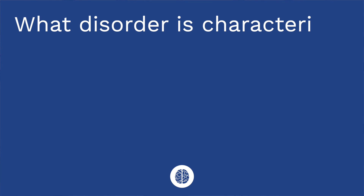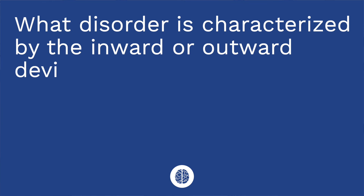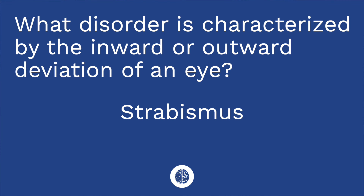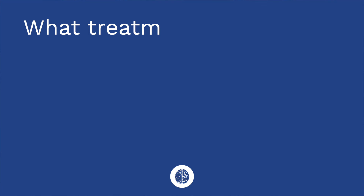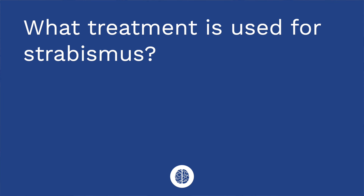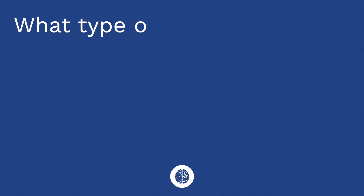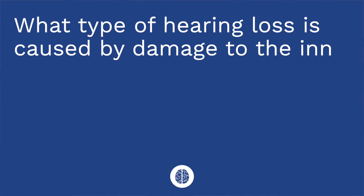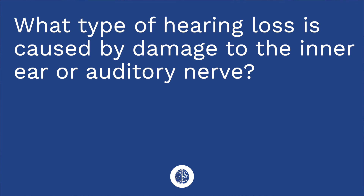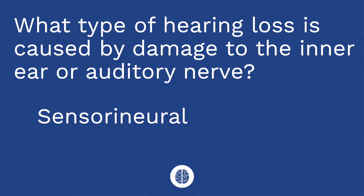It's quiz time — I have three questions for you. Question one: what disorder is characterized by the inward or outward deviation of an eye? The answer is strabismus. Question two: what treatment is used for strabismus? The answer is occlusion therapy — that's where we place an eye patch over the strong eye. Question three: what type of hearing loss is caused by damage to the inner ear or auditory nerve? The answer is sensorineural hearing loss.